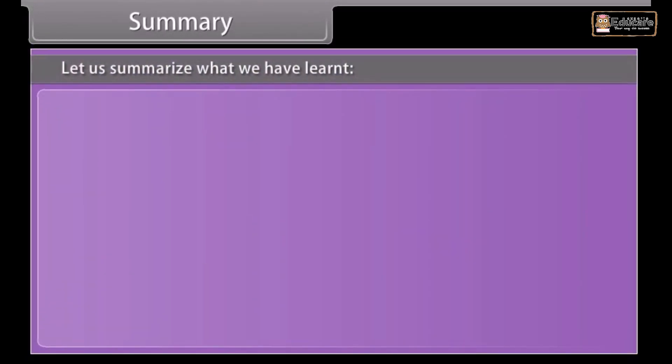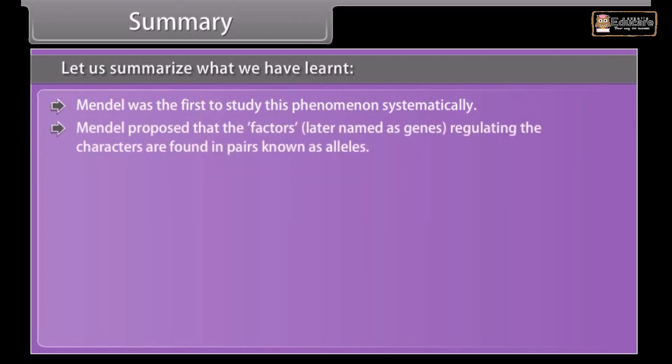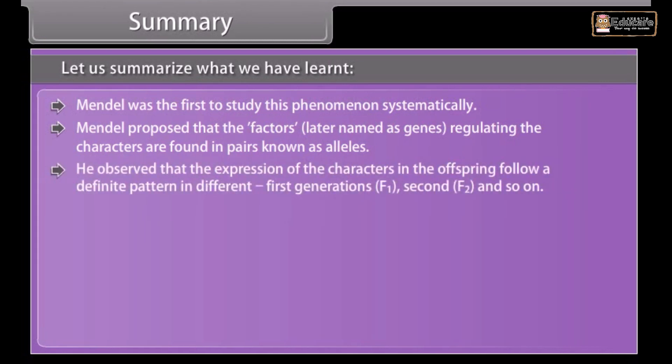Summary. Let us summarize what we have learned. Mendel was the first to study this phenomenon systematically. Mendel proposed that the factors, later named as genes, regulating the characters are found in pairs known as alleles. He observed that the expression of the characters in the offspring follow a definite pattern in different generations: first generation F1, second F2, and so on.